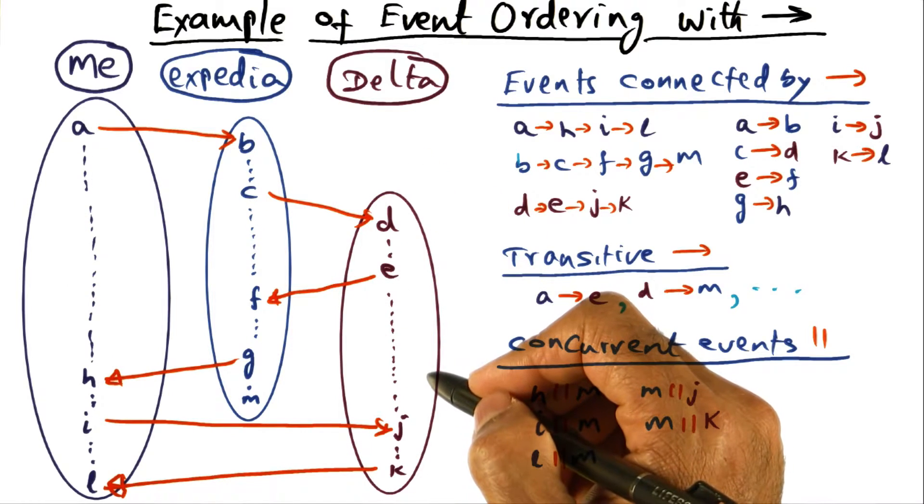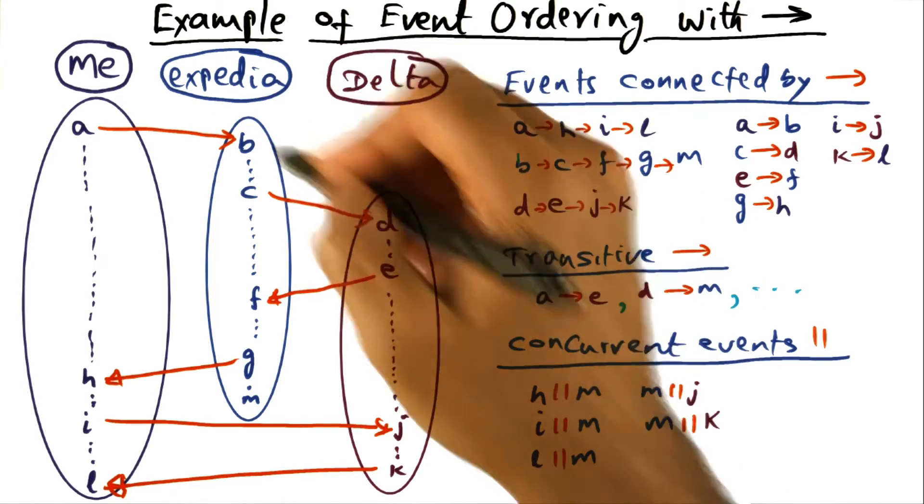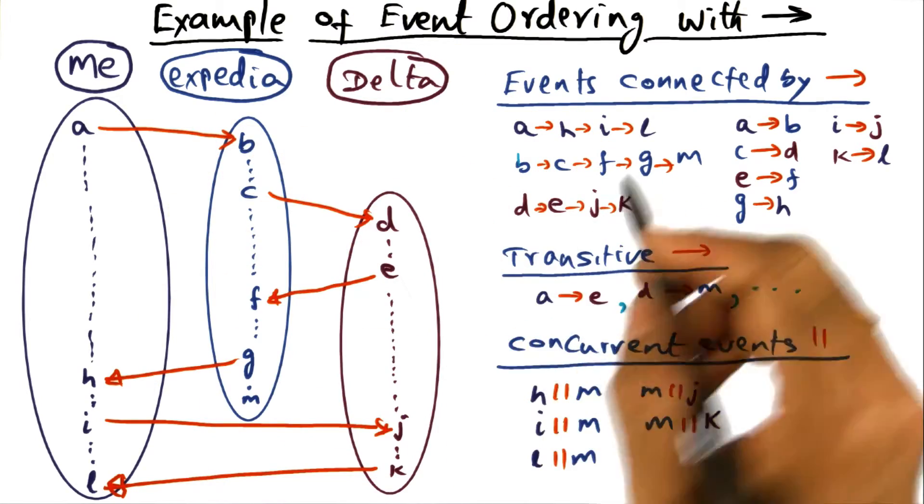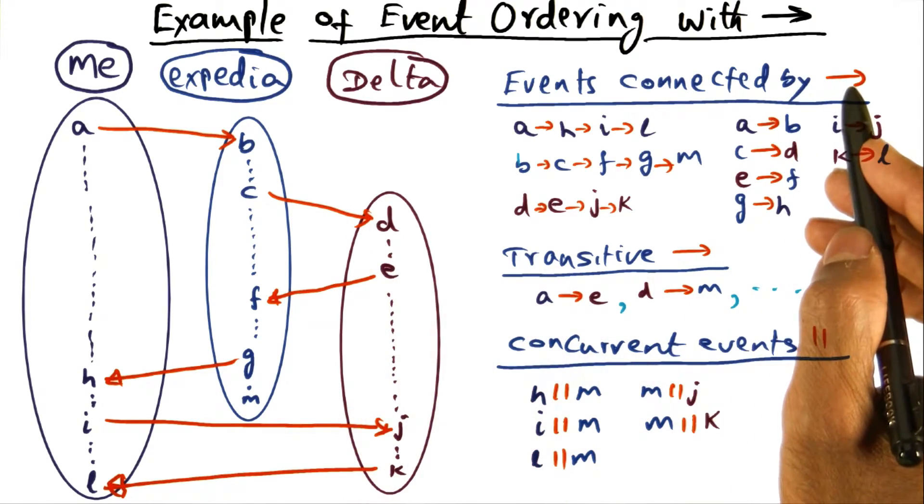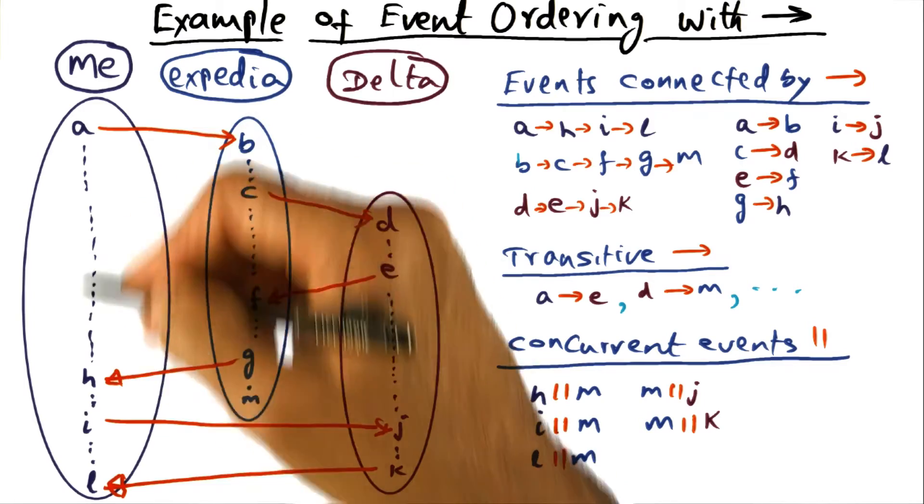Returning to our original example of me ordering a ticket to go to India via Expedia and Delta, let's now identify all the events that are connected directly by the happens before relationship. So if these are the events in my process,